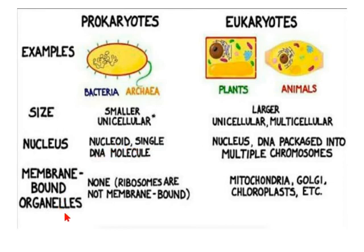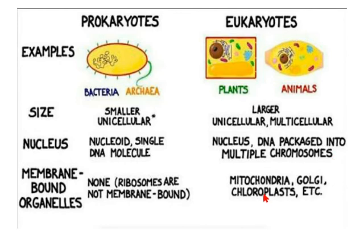Prokaryotes have only ribosomes, which are smaller than those found in eukaryotes. Eukaryotes — 'eu' means true, 'karyote' means nucleus — are organisms with a true nucleus. Examples include plants and animals. They can be unicellular or multicellular, have a nucleus with DNA packaged into multiple chromosomes, and possess membrane-bound organelles like chloroplast, mitochondria, Golgi apparatus, and endoplasmic reticulum.